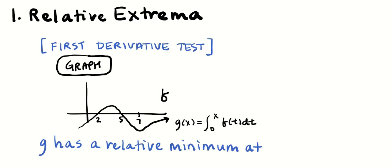In this video we're going to be talking about justifying our answers on free response for Calculus AB. I'm going to start with the relative extremum — a relative maximum or minimum. It's going to be a place where we have a sign change in the first derivative.